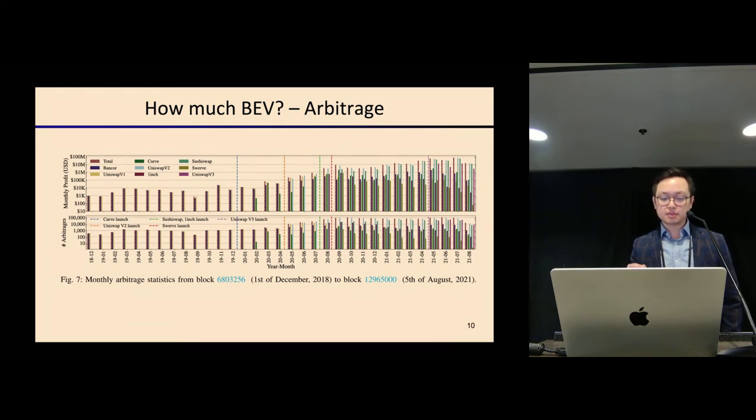Similarly, we observed something similar for arbitrage. We also have the time frame on the x-axis. The profit also increased from 1K to roughly 100 million for arbitrage. For both sandwich and arbitrage, the revenue stream is relatively steady for these BEV extractors.